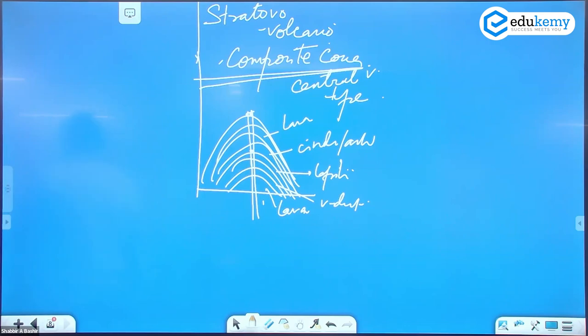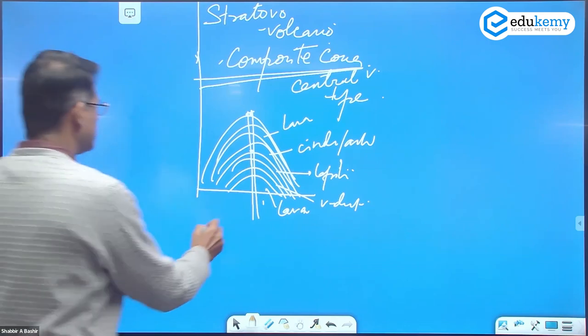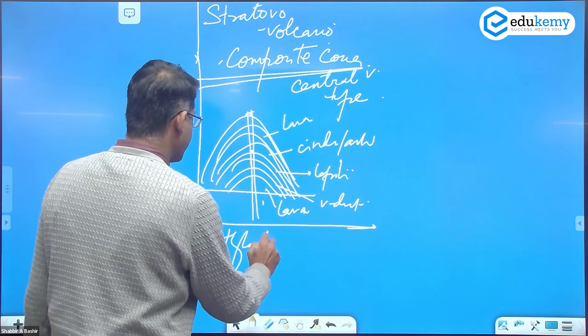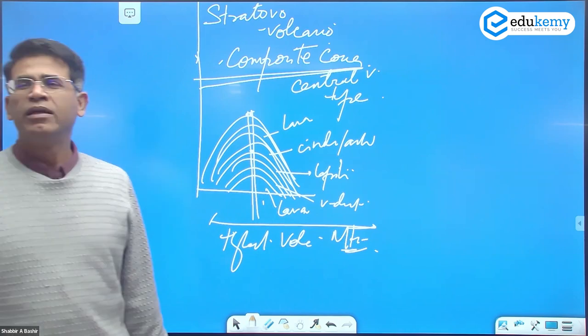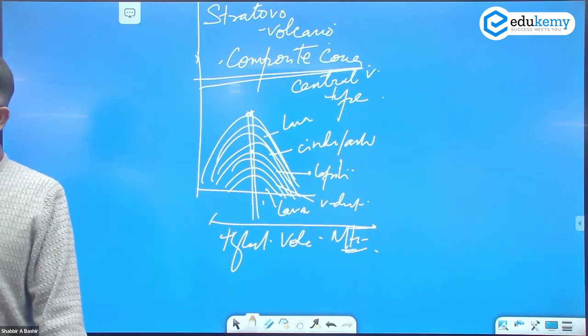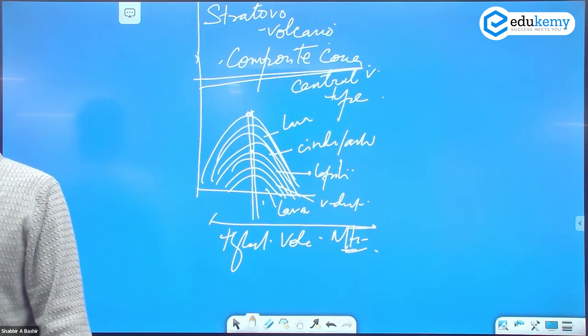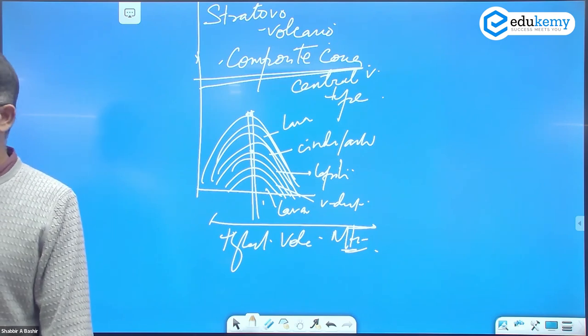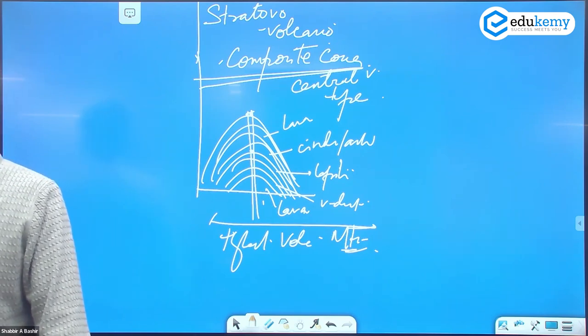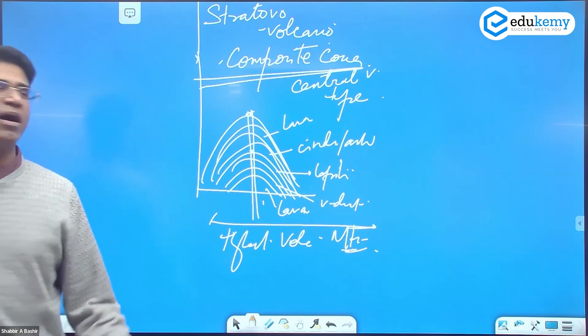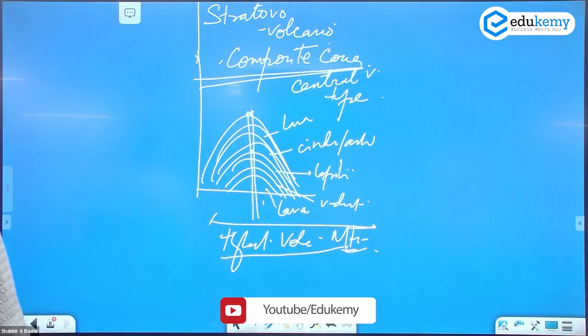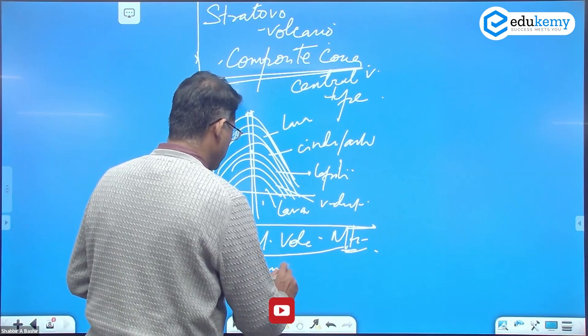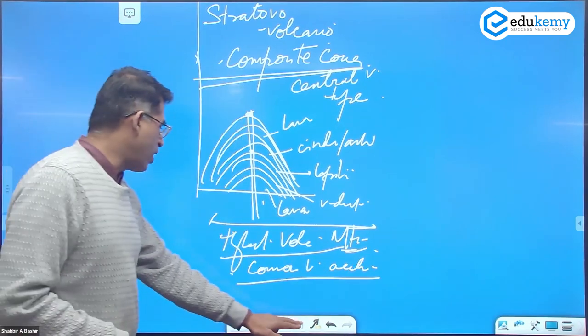And these form the highest volcanic mountains. So Mount Kilimanjaro, Mount Aconcagua, Mount Fujiyama, Mount McKinley, jo jo naam bataya, all of them are composite cones. They form the highest volcanic mountains. They are the most common ones. These are the most common volcanic accumulations. So that's one type, composite cones or stratovolcano.